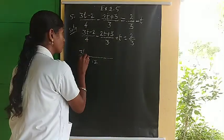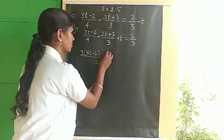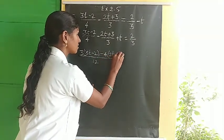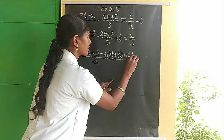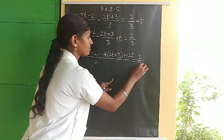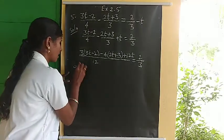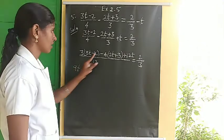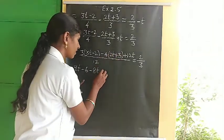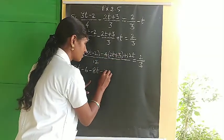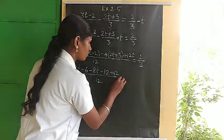Since LCM is 12, multiply the first term by 3 and the second term by 4, and the t term by 12. Inside: 3 times 3t minus 2, minus 4 times 2t plus 3, plus 12t, divided by 12, equals 2 by 3. Multiplying inside: 3 threes are 9t, 3 twos are minus 6, 4 twos are minus 8t, 4 threes are minus 12, plus 12t.